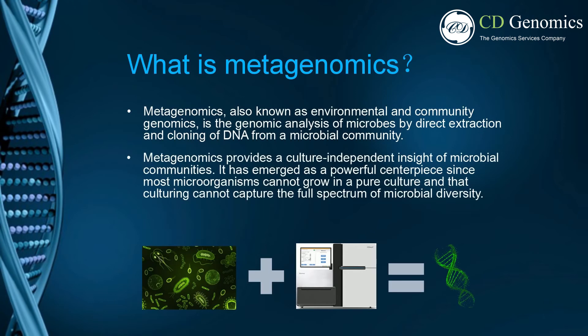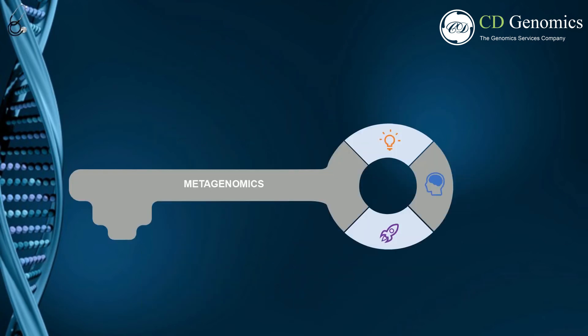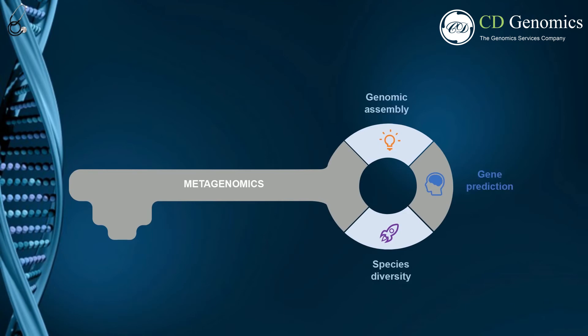It has emerged as a powerful centerpiece, since most microorganisms cannot grow in a pure culture, and culturing cannot capture the full spectrum of microbial diversity. The obtained community taxonomic profile can provide massive amounts of information on genomic assembly, gene prediction, and species diversity. Comparative metagenomics can provide additional insight into the function of complex microbial communities and their role in host health.